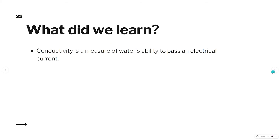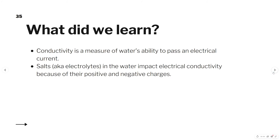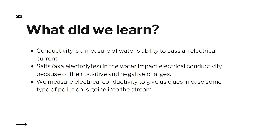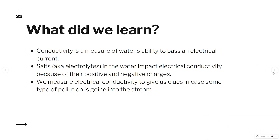So, what did we learn? Conductivity is a measure of a water's ability to pass electrical current. Salts, also known as electrolytes, in the water impact electrical conductivity because of their positive and negative charges. We measure electrical conductivity to give us clues in case some type of pollution is going into the stream. Really, anytime our office suspects any kind of pollution issue, they always measure for conductivity because it can tell us a lot.